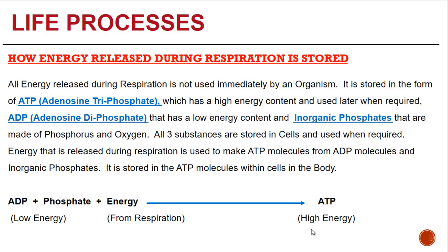Adenosine diphosphate, or ADP, has a low energy content. Inorganic phosphates, made of phosphorus and oxygen, are also utilized. All three substances — ATP, ADP, and inorganic phosphates — are stored in cells. Energy released during respiration is used to make ATP molecules from ADP molecules and inorganic phosphates, and that energy is stored in the ATP molecules within cells. The equation shows: ADP plus inorganic phosphate plus energy from respiration gives adenosine triphosphate, which provides our body with energy.